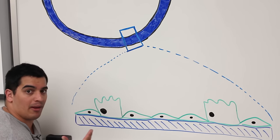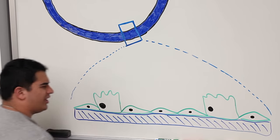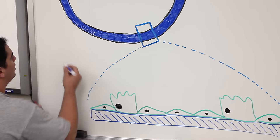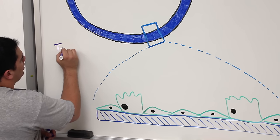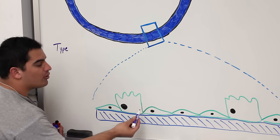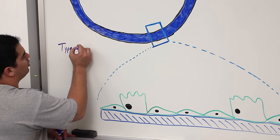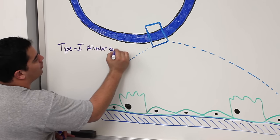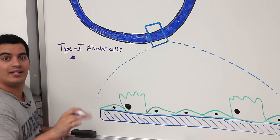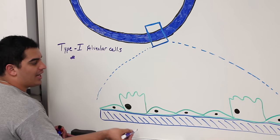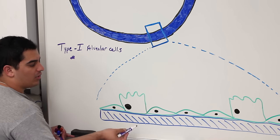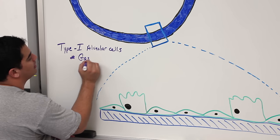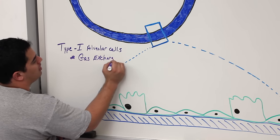Here we have this blue layer, which is basically the basal lamina — the basement membrane. Then we have the alveolar cells. There are actually two types of alveolar cells: type 1 and type 2. Type 1 alveolar cells — also called type 1 pneumocytes — are the ones primarily involved in gas exchange. Whenever oxygen is moving from the alveoli into the blood and whenever CO2 is moving from the blood to the alveoli, that's what type 1 contributes to. They are squamous epithelial cells and are more abundant than type 2.